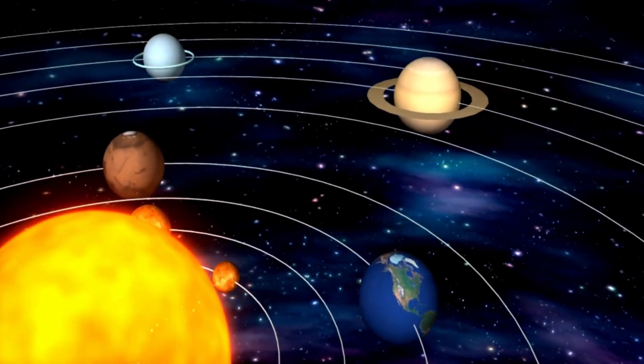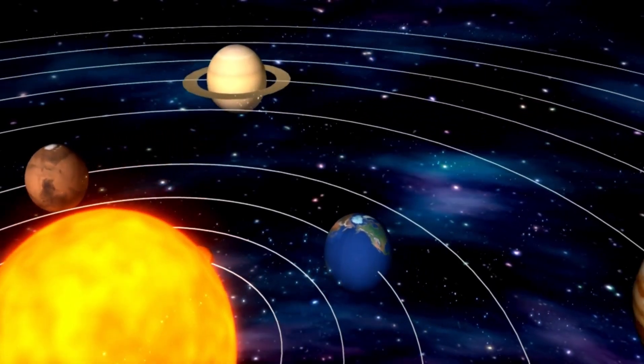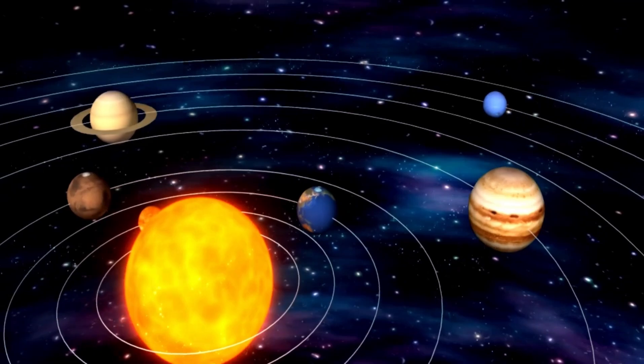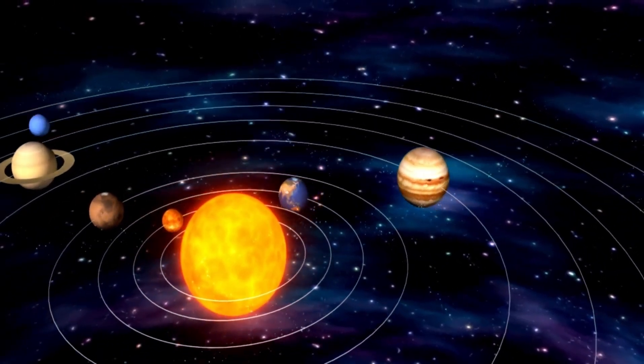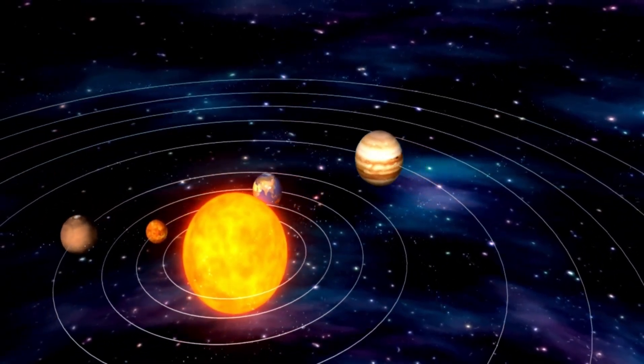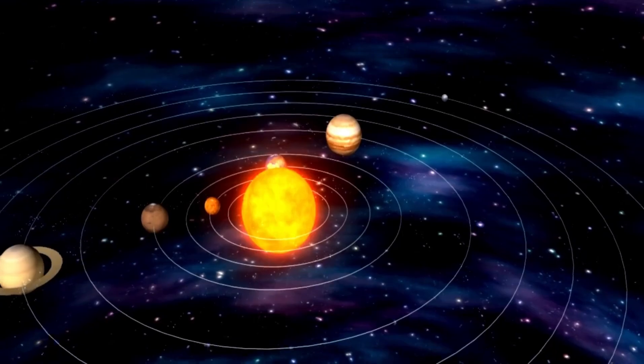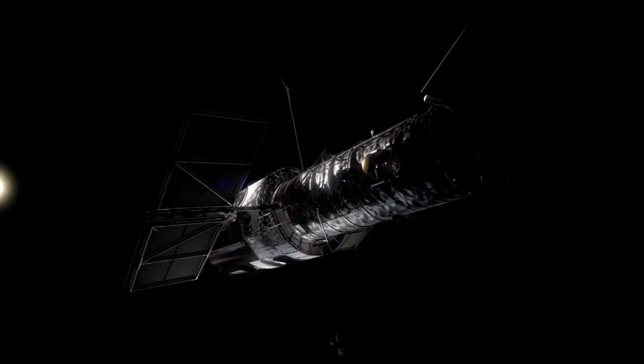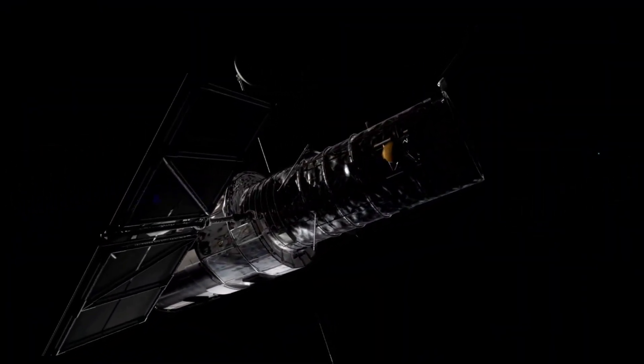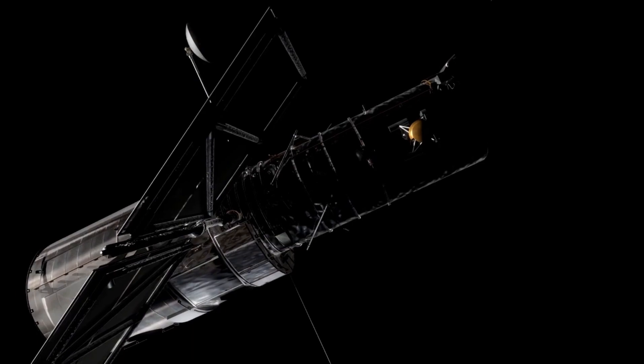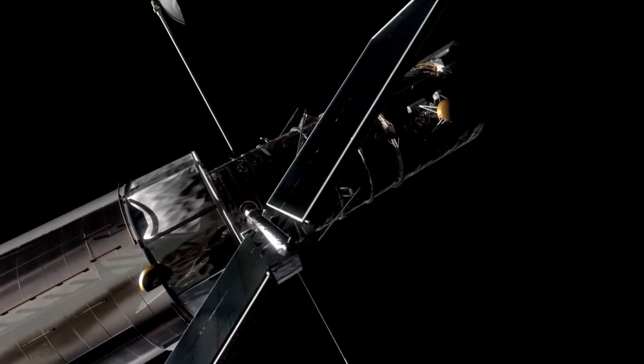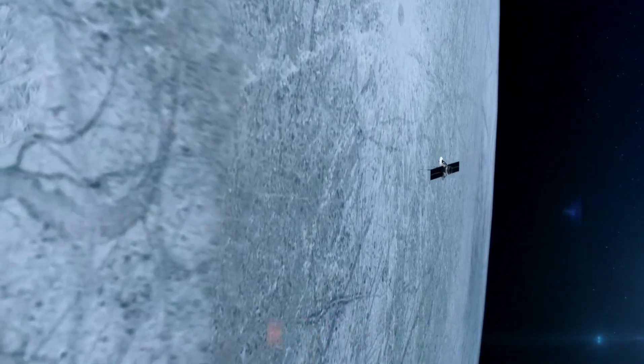Pluto is orbiting what we call the Kuiper Belt, where thousands of other objects are also orbiting out there with Pluto. This littered area is just like the asteroid belt. NASA, on their pioneering decade-long mission to explore the Pluto system and the Kuiper Belt billions of miles from Earth, has sent a little robotic spacecraft to show us the first glimpse of mysterious Pluto.